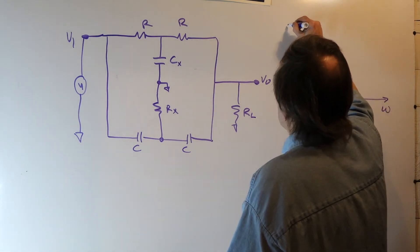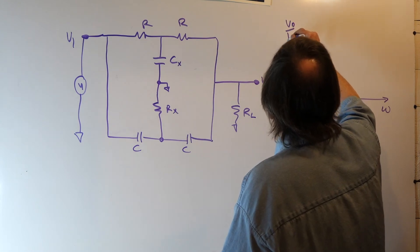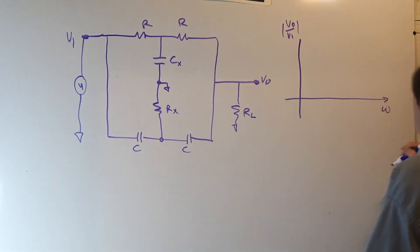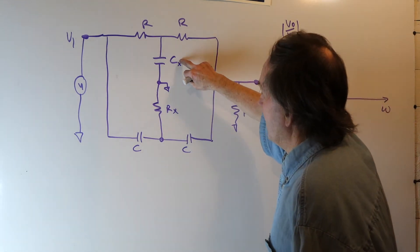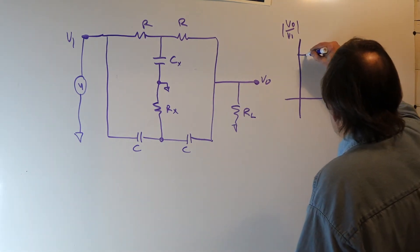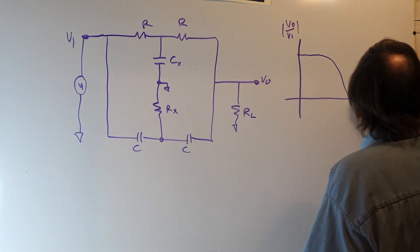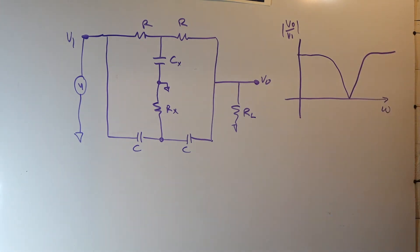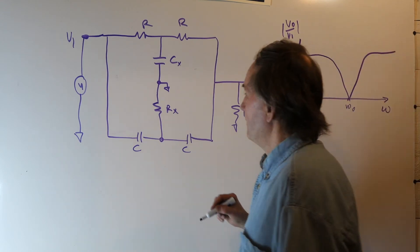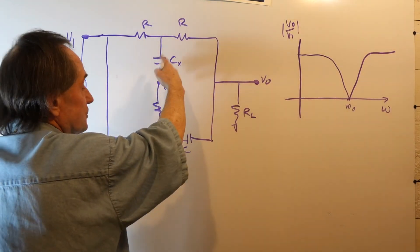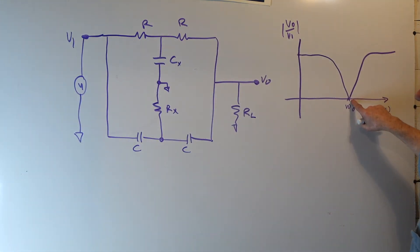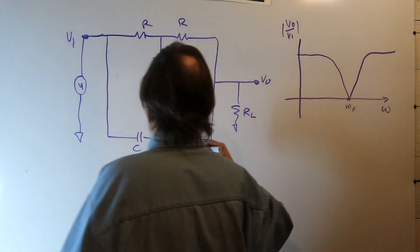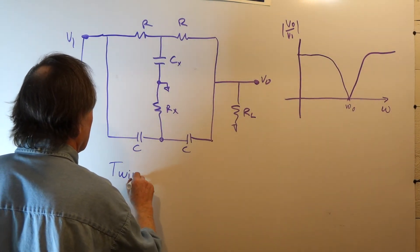Frequency or magnitude of Vout over V1 versus frequency. What you'll find that will happen when the RX and CX are appropriately chosen, your response will go like this. And you get a null at some frequency called omega zero. That's a function of R and C and the choices you make for RX and CX. And this is called a null network, the twin T.